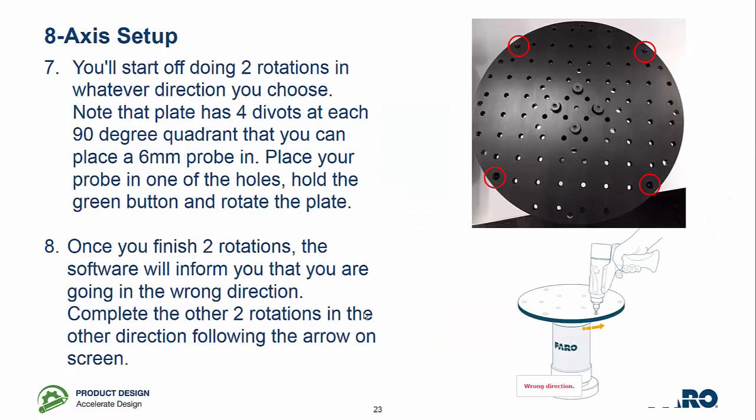So to compensate it, at 90-degree intervals on the plate, we have four conical holes. You place your sphere in one of those holes and then you choose which direction you're going to go in and you perform two rotations. Once you've done the first two rotations, the system will tell you you're going in the wrong direction. So you simply reverse that direction and do two rotations in the opposite direction.